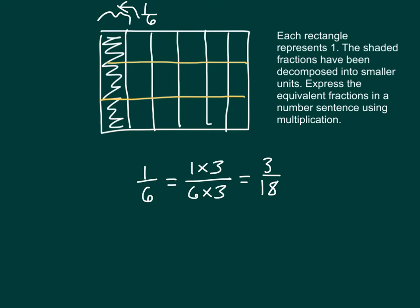And as you can see in the figure, we do have one, two, three parts that are shaded out of one, two, three, four, five, six, seven, eight, nine, ten, eleven, twelve, thirteen, fourteen, fifteen, sixteen, seventeen, eighteen, out of eighteen. Therefore, one-sixth does equal three-eighteenths.